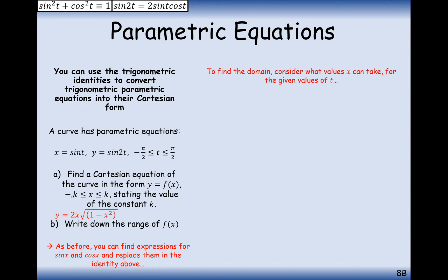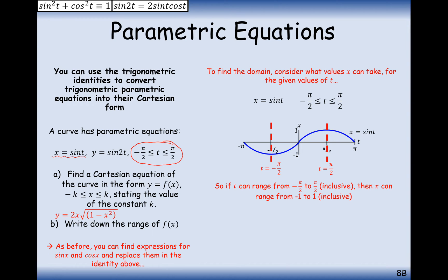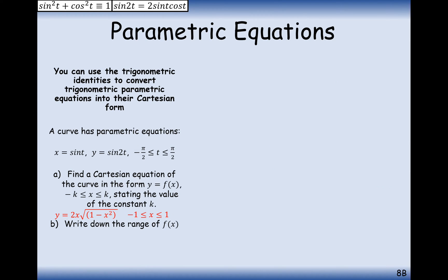We still need to find the domain — from −k up to k. We use x = sin(t) since the domain is the range of x values, so we plug the t-value limits into the x equation. Substituting the upper and lower bounds, we get x ranging from −1 to 1. Therefore, the domain is −1 ≤ x ≤ 1. That finishes part A.